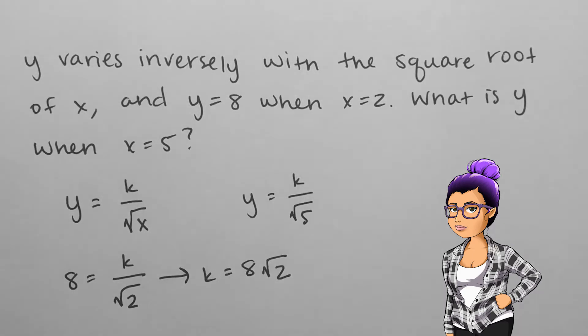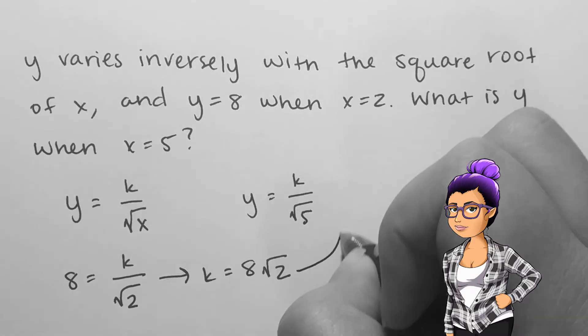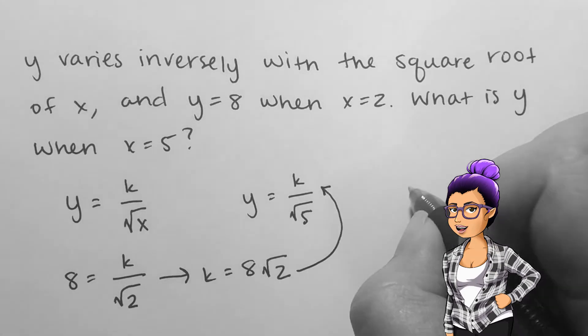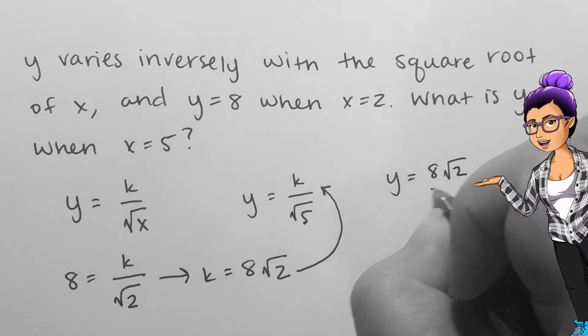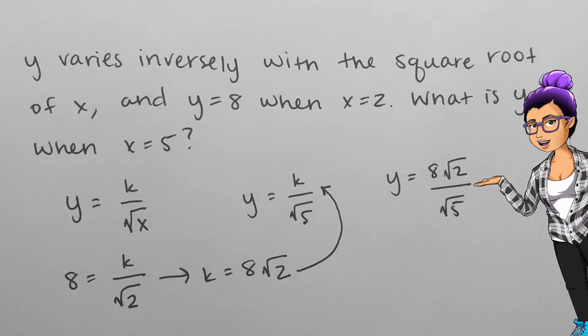Now the purpose of the problem was to find y when x is 5, so y equals 8 times square root of 2 over square root of 5. This answer is exact and perfectly fine. It's a matter of preference as to whether the root is allowed in the denominator.